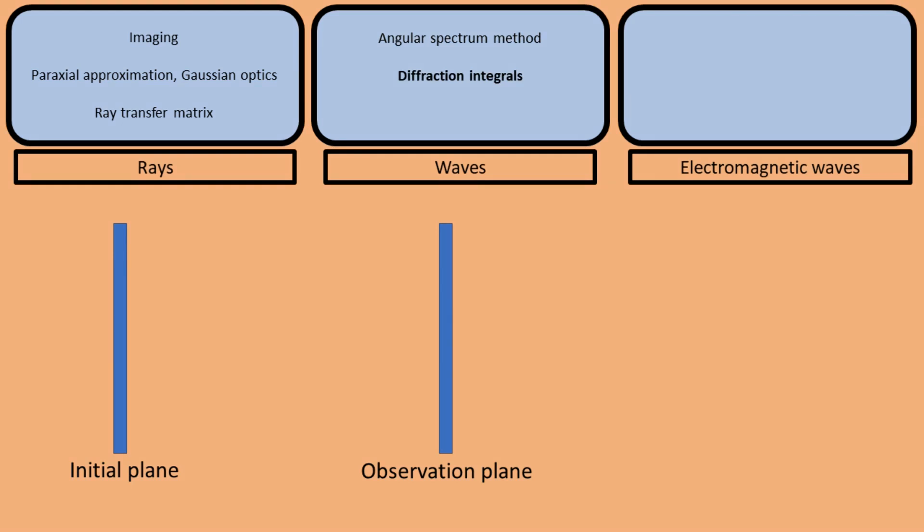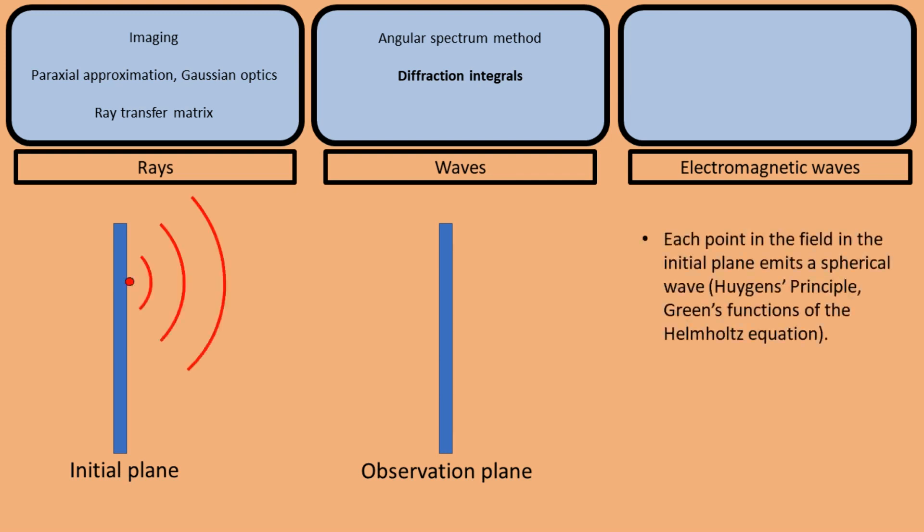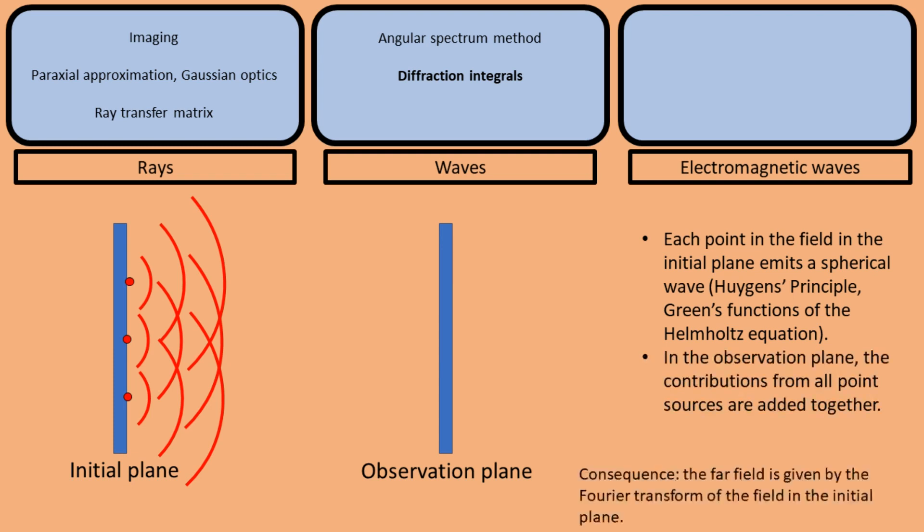The other way to calculate how a field propagates is by using the diffraction integrals. In this method, we say that each point in the field of the initial plane emits a spherical wave which is in accordance with Huygens principle and which is closely related to the fact that the Green's function of the Helmholtz equation is a spherical wave. To find the field in the observation plane, we must add the contributions from all these point sources together. Using this method, one can demonstrate that the far field is given by the Fourier transform of the field in the initial plane. To understand intuitively why this is the case, one can see that if a spherical wave propagates for a large distance, the spherical wavefront becomes approximately a planar wavefront. So each point source generates in the far field a plane wave in a certain direction, which there add together. And adding plane waves with different directions together is precisely what a Fourier transform does.